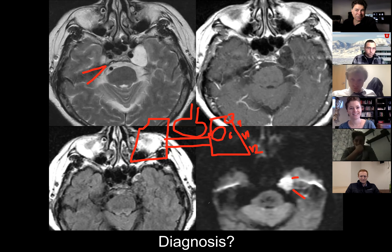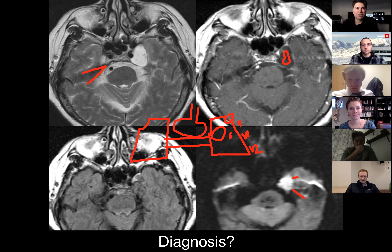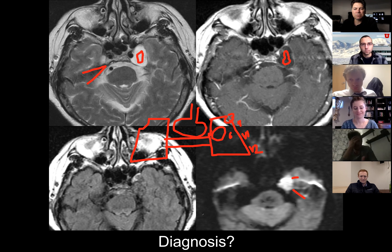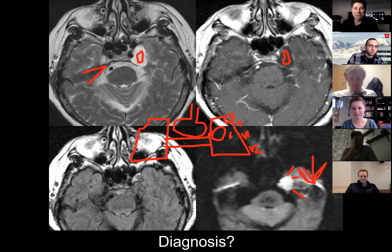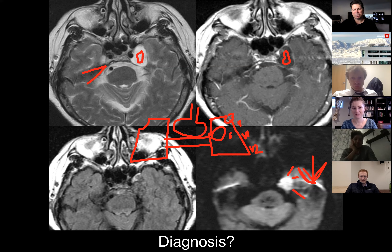This thing is actually not enhancing — it looks like it's fluid. What if it followed CSF on all sequences and did not restrict on diffusion? Then it'd be an arachnoid cyst. But because it's bright on diffusion and dark on ADC, this is an epidermoid cyst. What if this exact same thing were in the middle ear cavity? And what do we call something that looks like an epidermoid cyst but is centered in the middle ear? A cholesteatoma.